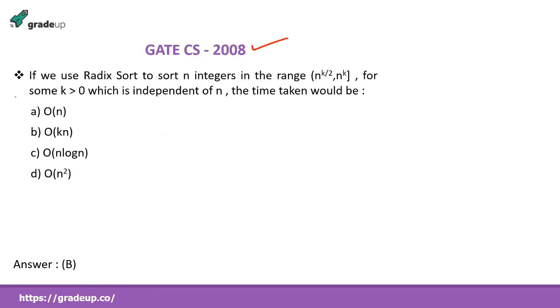Gate CS 2008. If we use radix sort to sort n integers in range n power k by 2 to n power k. What is the time taken? You notice they are linear time sorting. In radix sort. The complexity is number of digits into order of n. Yes or no? I have explained. There I take the number of digits to be c. The complexity is order of cn. Asymptotically order of n. So the range n power k by 2 to n power k. The maximum is n power k. The maximum is n power k. How many digits it will have? Of course k digits. So here the number of digits are k into order of n. That is order of k n. Option B. Cleared? Any doubt? Very simple questions are being asked on these algorithms.